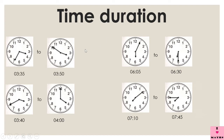Time duration is the amount of time which has passed between the starting time and the ending time of an event. Let us see the first clock. The time is 3:35, since our minute hand is at 7, and here the time is 3:50. Now you have to find out how much time has passed from 3:35 to 3:50.